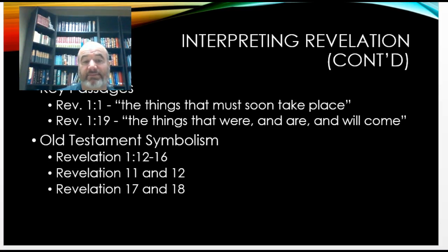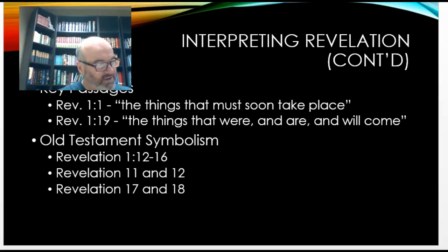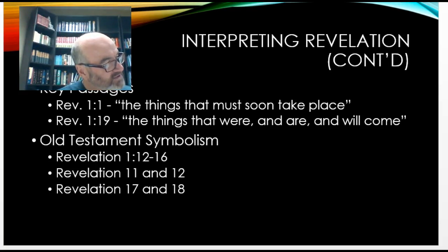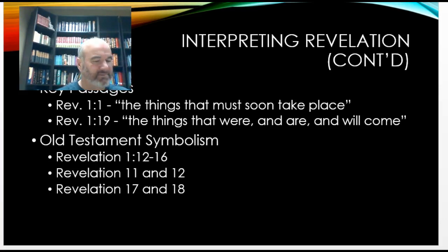We also see a lot of Old Testament symbolism in Revelation. From Revelation chapter 1, verses 12 through 16: 'I turned to see the voice that was speaking to me, and turning I saw seven golden lampstands, and in the midst of the lampstands one like a son of man clothed with a long robe.' He uses the symbolism of the sevens. 'When I saw him I fell at his feet as though dead, but he laid his right hand on me saying, Fear not, I am the first and the last and the living one. I died and behold I am alive forevermore, and I have the keys of death and Hades.' We see symbolism expressed throughout Revelation as apocalyptic literature, tying in with Old Testament symbolism.